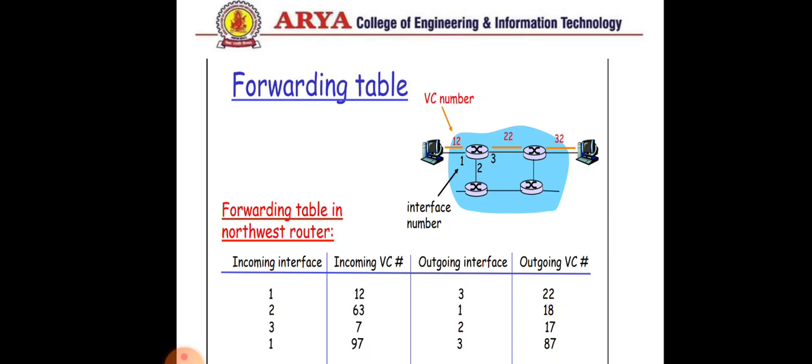The incoming interface defines which port the frame is arriving from. Here, port number 1 is the incoming interface, so a frame arrives at port number 1 with VC number 12. The outgoing interface defines on which port the frame will be sent, and the outgoing VC number is also stored in the table.